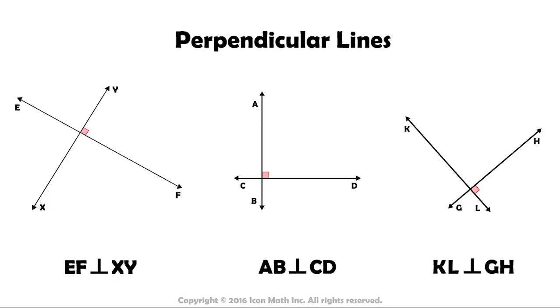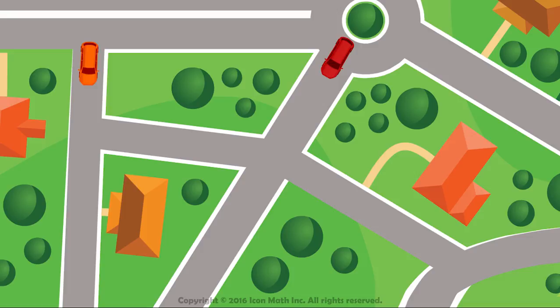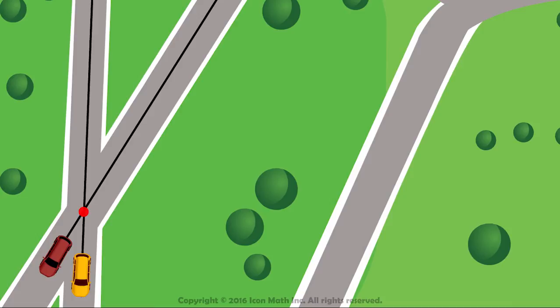But do all lines intersect? Let's see. Assuming that these two cars are moving as follows, the lines representing their movement don't intersect in our screen. But if we extend them, we will see that they meet at some point.